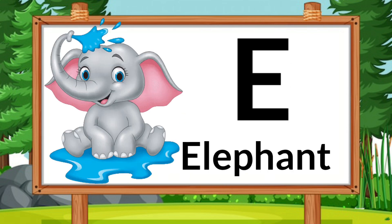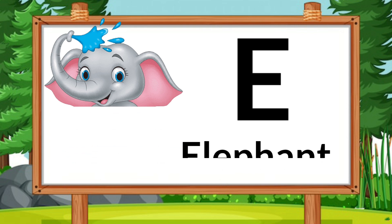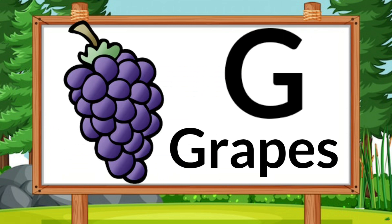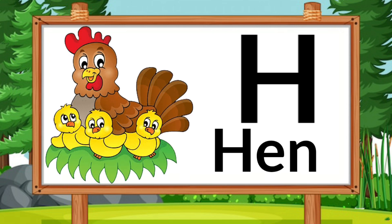E for Elephant. F for Fish. G for Grape. H for Hen.